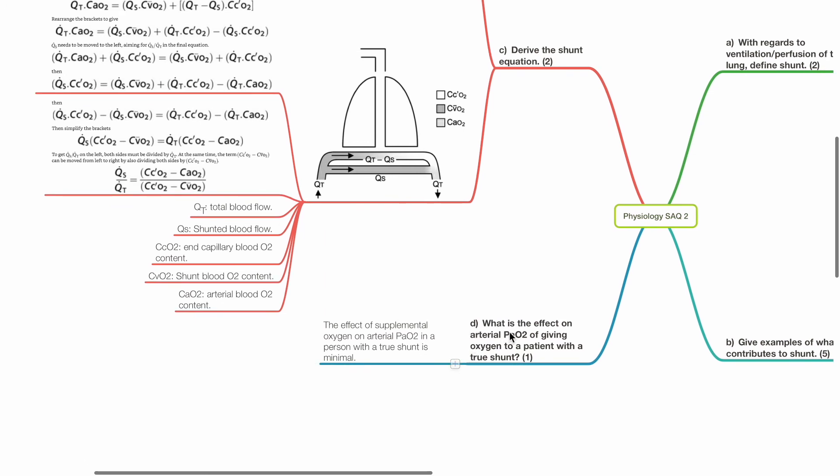What is the effect on arterial PaO2 of giving oxygen to a patient with a true shunt? 1 mark. The effect of supplemental oxygen on arterial PaO2 in a patient with a true shunt is minimal.